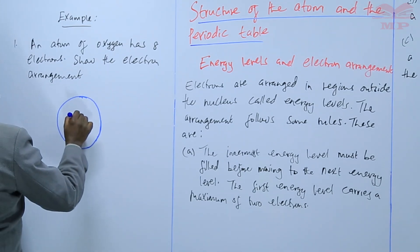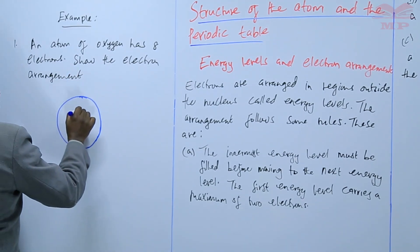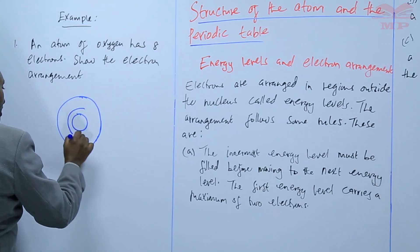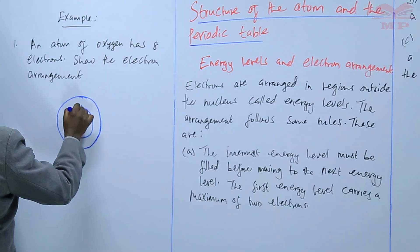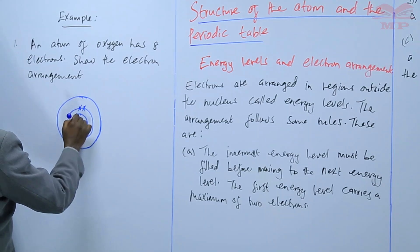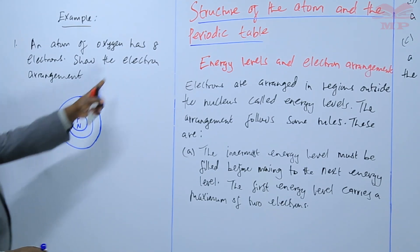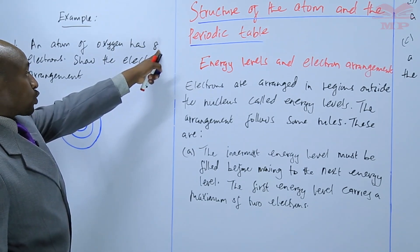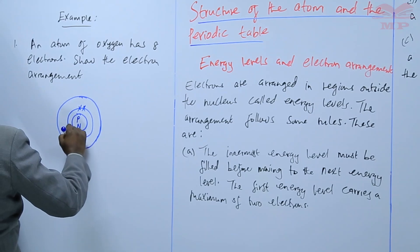We have the nucleus. The first two electrons we shall put in the first energy level — we shall use crosses to represent the electrons. Of course, here we have the protons and the neutrons. After putting two, we are left with six out of a total of eight. The remaining six we will put on the second energy level.